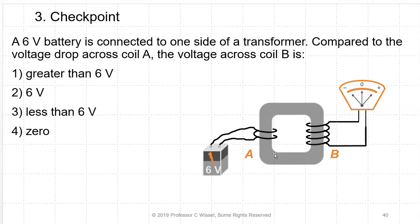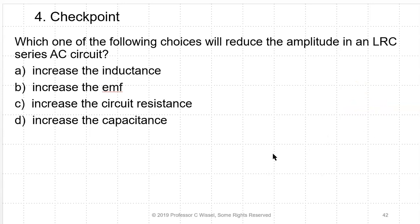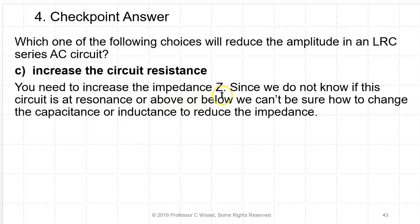Concept check: which action reduces the current amplitude in an LRC series AC circuit? The only reliable answer is increasing the circuit resistance, because that increases impedance. Increasing the EMF increases amplitude. Changing the inductance or capacitance may help or hurt depending on which side of resonance you're on, so you don't know without more information. Increasing resistance is the only universally correct choice.